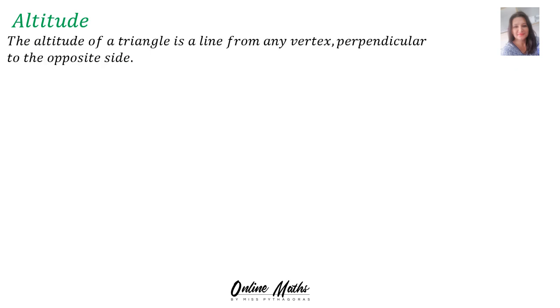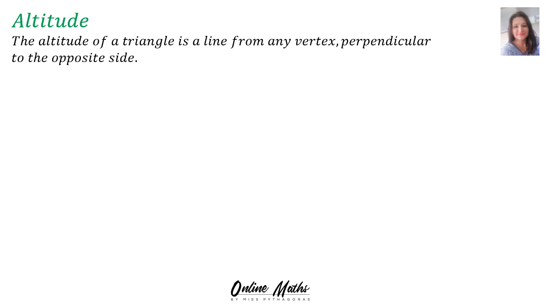Altitude. The altitude of a triangle is a line from any vertex perpendicular to the opposite side. There you can see AK is an altitude with AK perpendicular to BC.